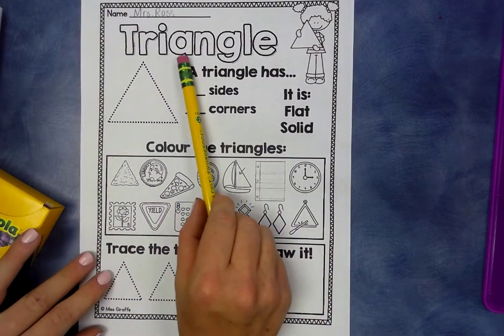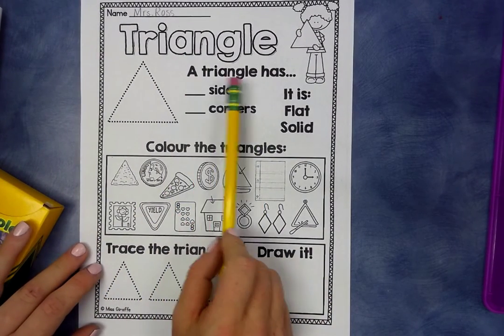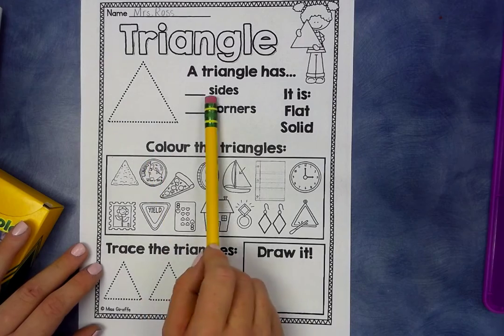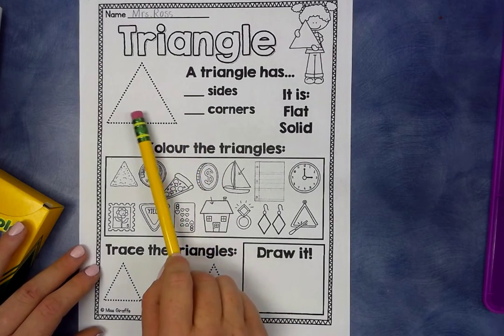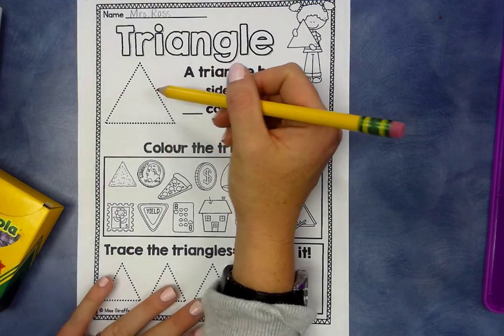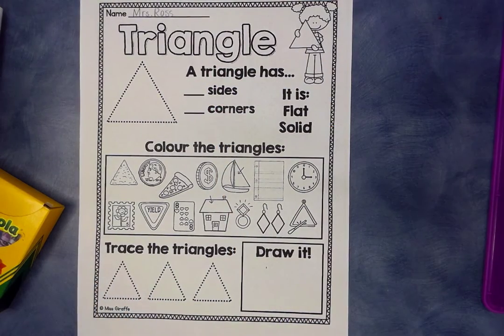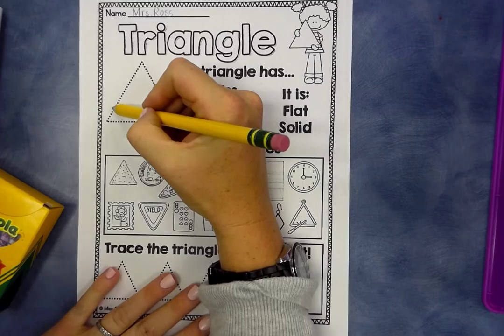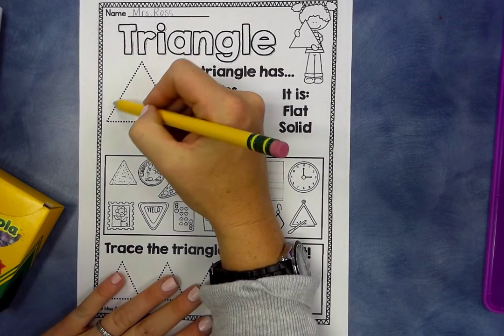All right, we're going to start with triangle. A triangle has, hmm, how many sides? Let's look at this triangle here. A side is like the big long line, so if it's a big long line, how many big lines do we have?